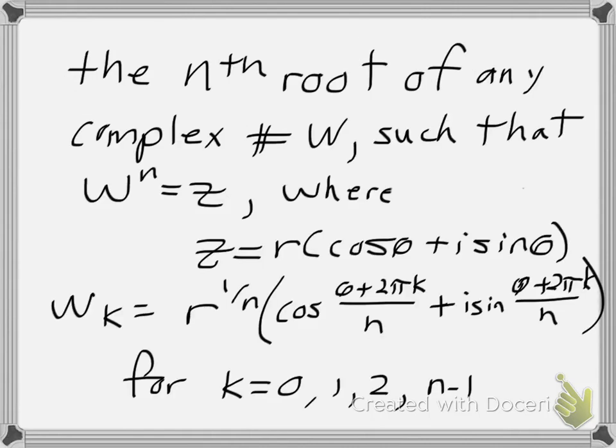We're going to use our formula to find the nth root of a complex number, referring to w. A complex number w is such that w to the nth power equals z, where z is defined as the polar form of a complex number. Each individual root, w sub k, is equal to r to the 1 over n power, times the quantity cosine of theta plus 2 pi k over n, plus i sine of theta plus 2 pi k over n, for k equal to 0, 1, 2, up to n minus 1.